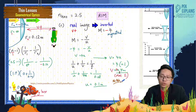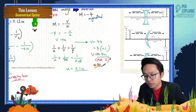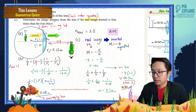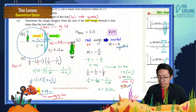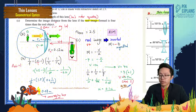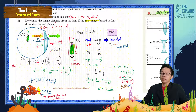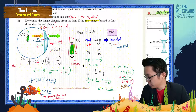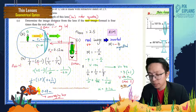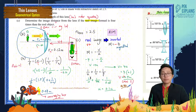Since v is positive, the image is a real image formed on the same side as the refracted ray. If I put a screen there, the refracted rays will fall onto the screen and form the image on it. This real image is inverted on the screen. That's it for this question and this chapter.